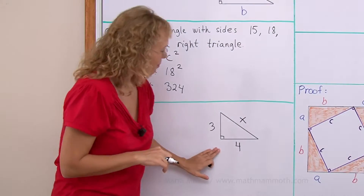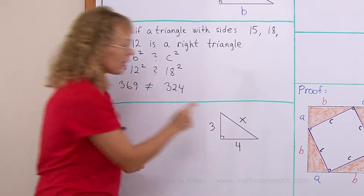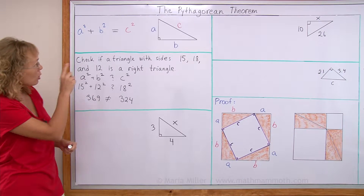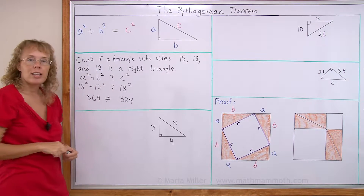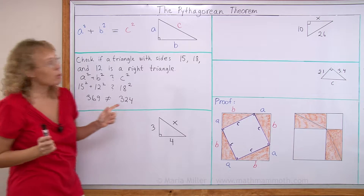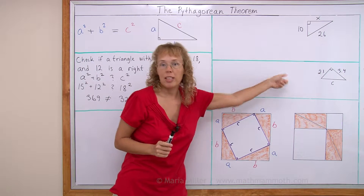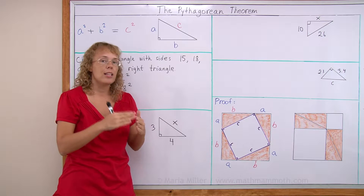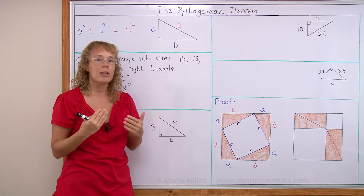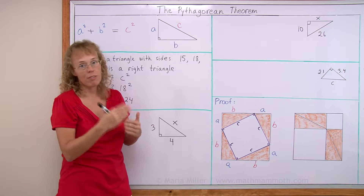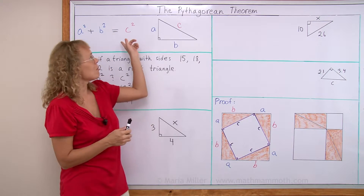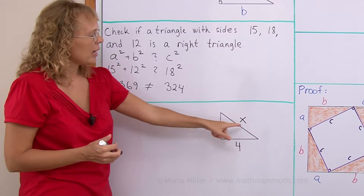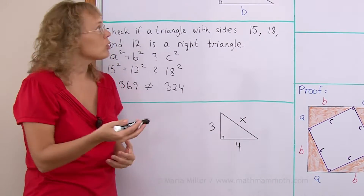Here I have a right triangle with one side unknown — we don't know how long that side is. We will use the Pythagorean theorem to find the unknown side, and we will do the same for two other triangles. Whenever you have a right triangle and you know two side lengths, you can always solve for the unknown side using the Pythagorean theorem. In this case, x is the longest side, the hypotenuse.